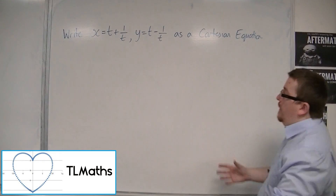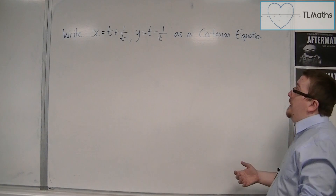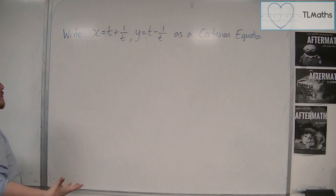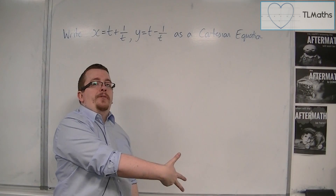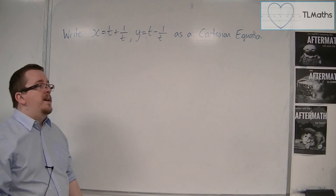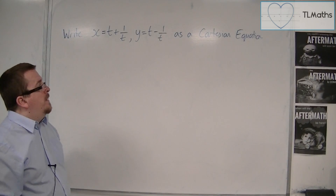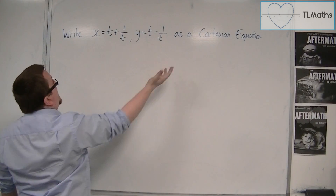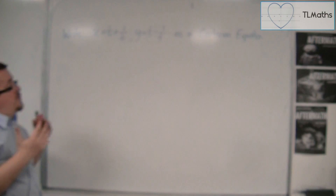So how about this one? Write x equals t plus 1 over t and y equals t minus 1 over t as a Cartesian equation. Well, if you saw the last video, I showed you an example where you weren't able to write either the x equals or the y equals as t equals just a function of x or just a function of y, in order to use the same method we've been using. And here is another example — I cannot rearrange either of these to get t equals a function of x or a function of y. So it's just not going to work.